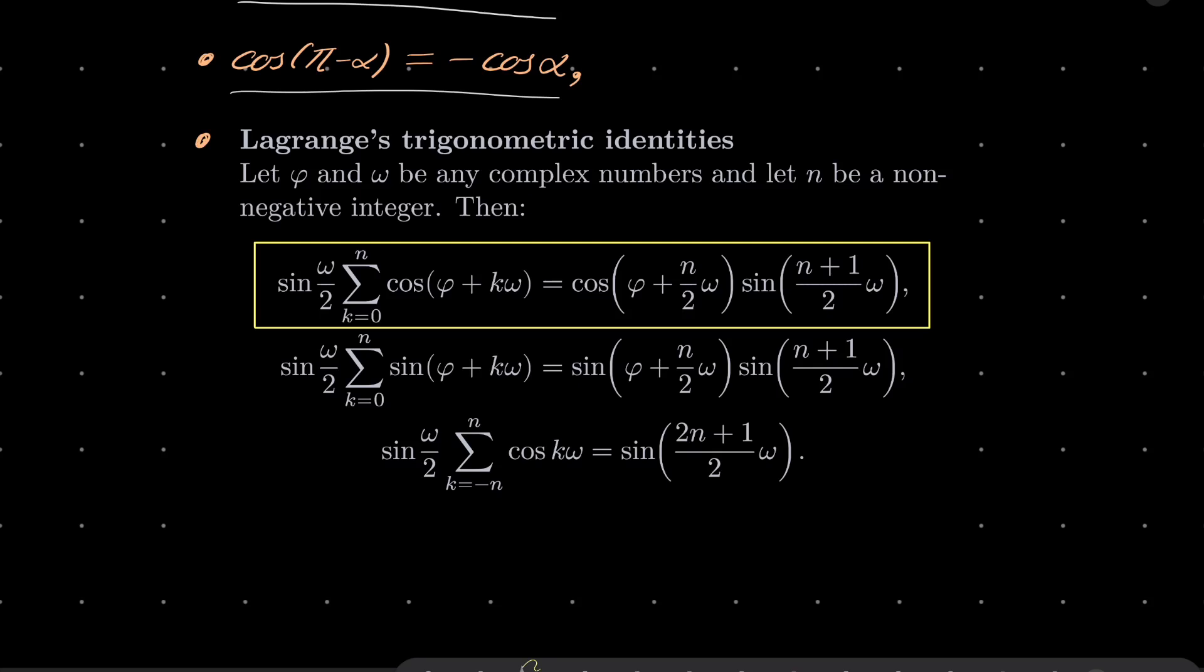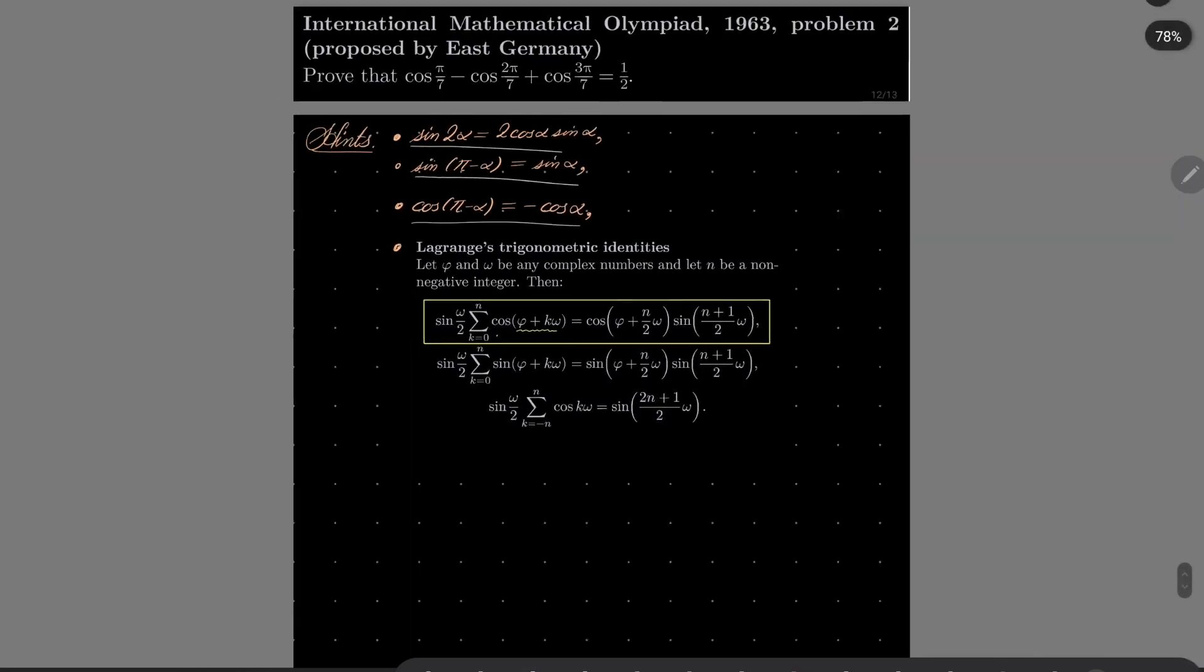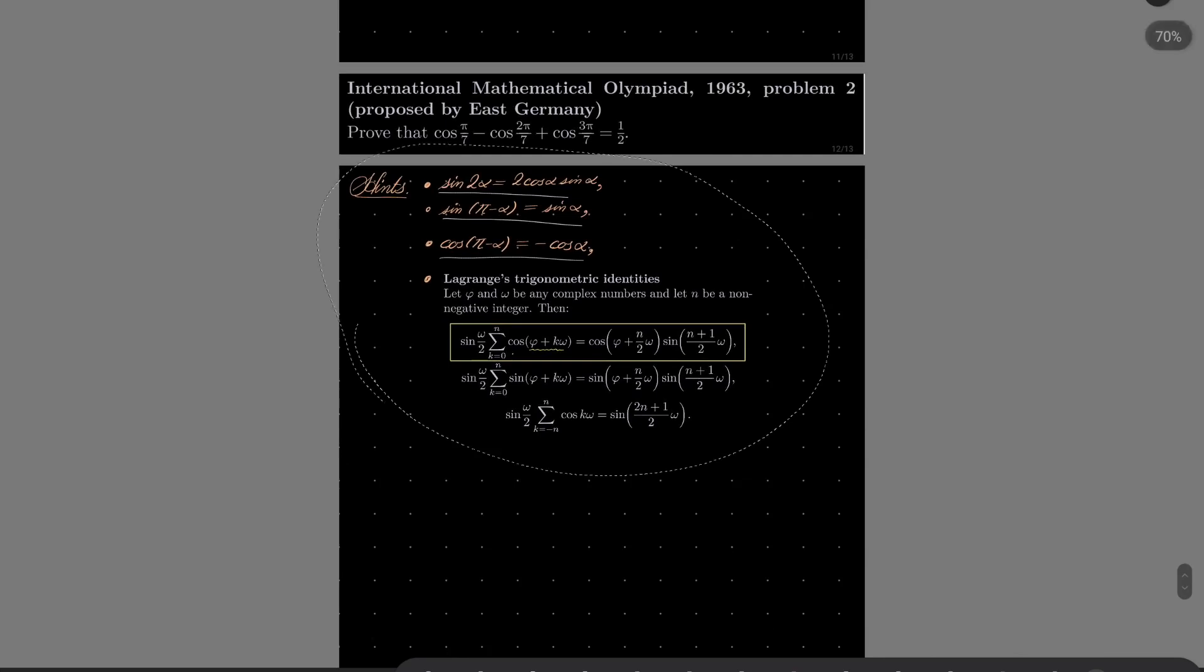Yes, we'll use this one. It's useful when we have sum of cosines whose arguments differ by the same amount, namely by omega. So try to reduce our problem to some appearing in this identity and use this identity to simplify our problem. So give this problem a try and I will see you in just a minute.